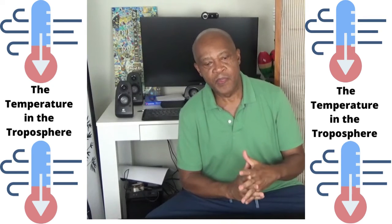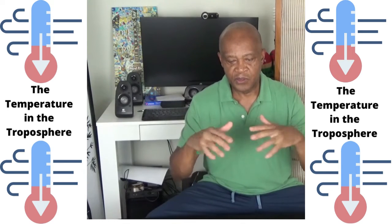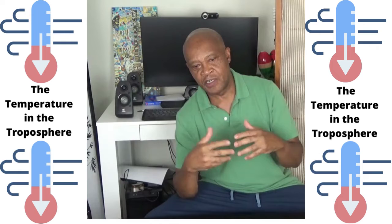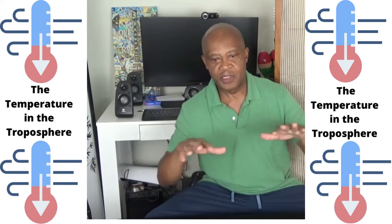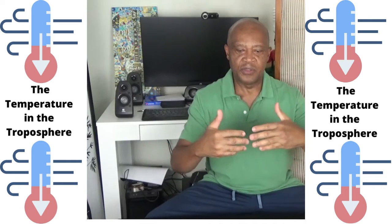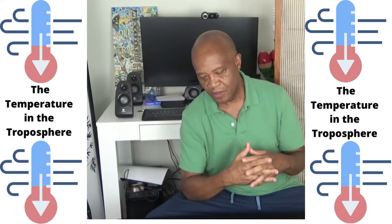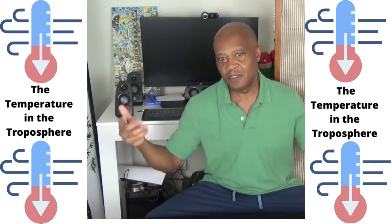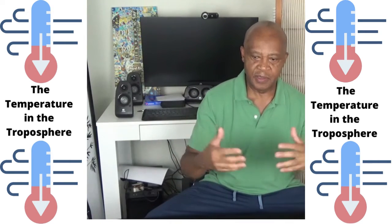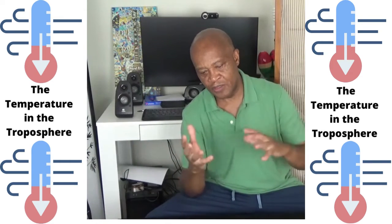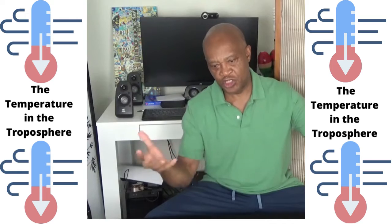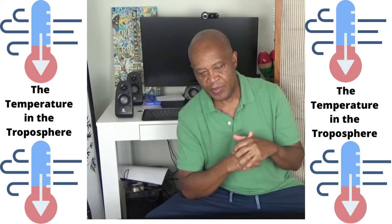The height of the troposphere is about 7 to 20 kilometers, or 4 to 12 miles, 23,000 to 65,000 feet above sea level. These measurements are averages, because the layers of the atmosphere don't stay constant. Their actual heights depend on the seasons — for example, whether it is summer or winter — and that's why there's always some kind of average in the height of a layer.